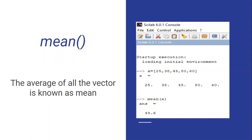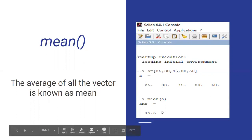Why divide by five? Because there are five elements in the vector: 25, 38, 45, 80, and 60. So it will add all five values and divide by five, and you will get the answer — that is called the mean.